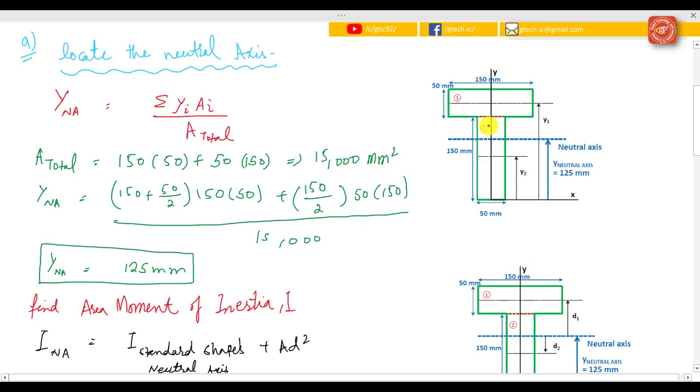Times the area, that is 150 × 50, plus y_2 (that is 150 divided by 2, which is the center of this cross section) times the area, then divided by the A_total. The y_na is 125 millimeter - that is the neutral axis of this unsymmetrical cross section T-beam.